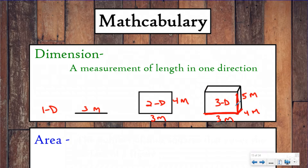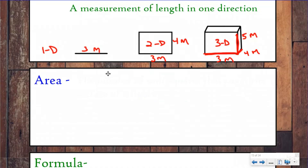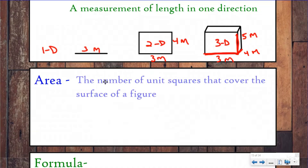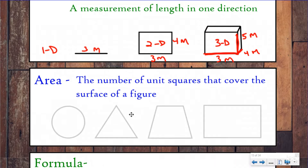Everything we're doing with this unit is going to be in two dimensions — it's going to have length and width — but we have to understand what the word dimension means and have a visual picture of it before we can talk about the rest of our lesson. Area is the number of unit squares that cover the surface of a figure, and we talked about this one yesterday so you don't need to write this down.